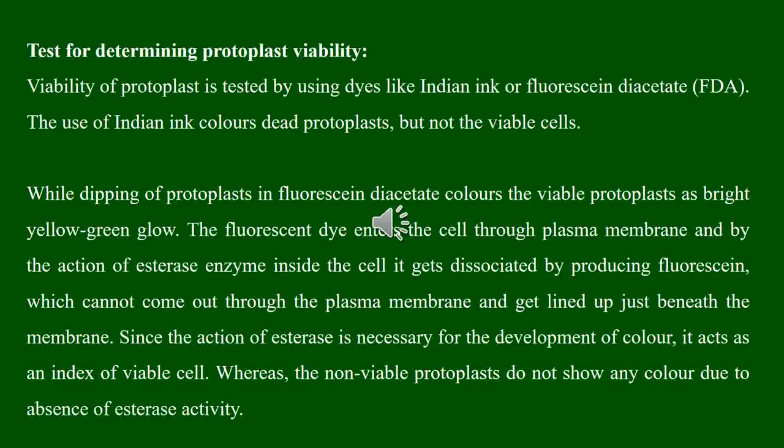Only viable protoplasts possessing the esterase enzyme — which is absent in non-viable protoplasts — can dissociate fluorescein diacetate to produce fluorescein. Therefore, the fluorescent color emitted by cells indicates their viability. Dead protoplasts, lacking normal esterase, cannot produce fluorescein and so show no coloration.